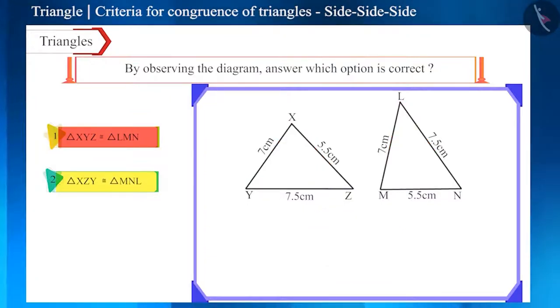Now look at the second option. The triangles are same. Only their names have been changed, because of which their corresponding sides are equal to each other now.